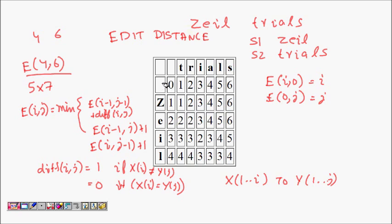The first row represents converting a zero-length string into 't', 'tr', 'tri', etc. Converting empty string to empty string is 0; to 't' requires one insertion; to 'tr' requires 2; to 'tri' requires 3; and to 'trials' requires inserting t, r, i, a, l, s — so length 6.